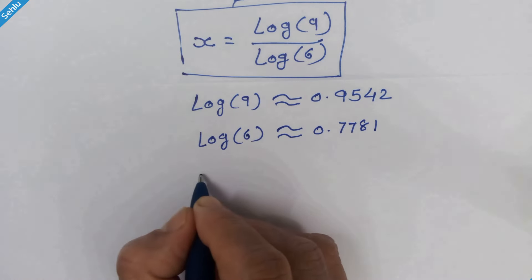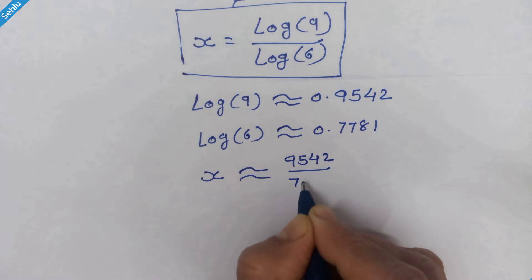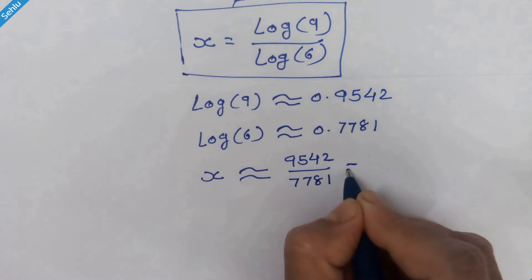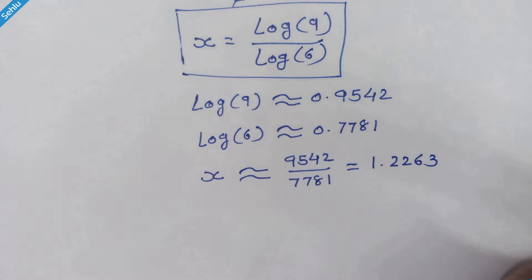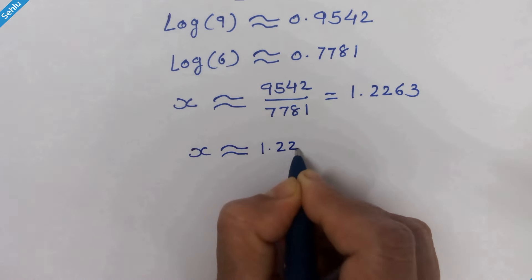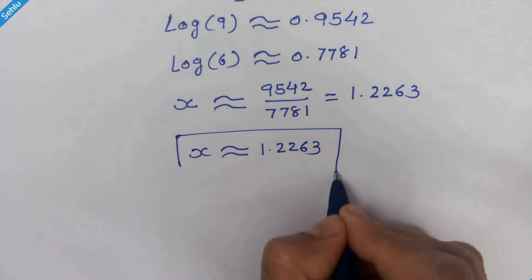So x is approximately 9542 upon 7781, which equals 1.2263. This is the decimal approximation for x.